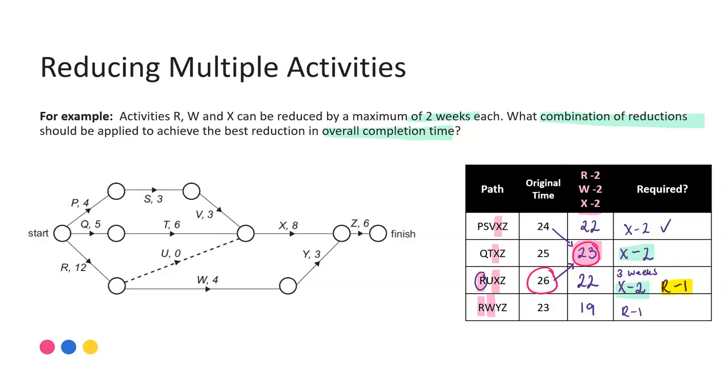So then to wrap up and give my final answer, once I've done all this working off to the side, what combination of reduction should be applied to achieve the best reduction in the overall completion time? I should reduce activity X by two weeks and R by one week. So that gives us that overall saving of three weeks and we haven't wasted any. We haven't done any additional reductions that weren't necessarily required.